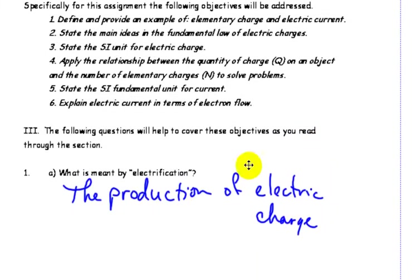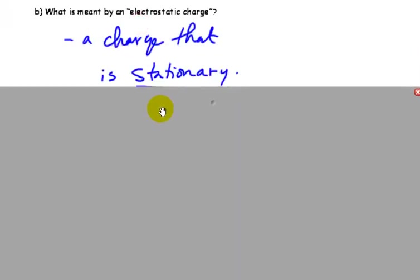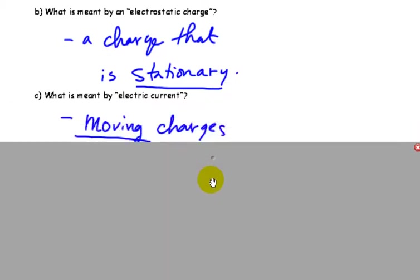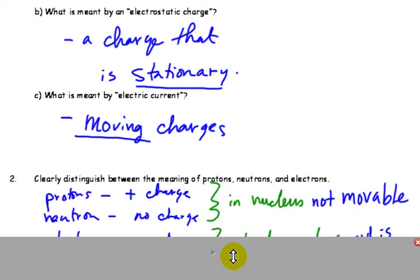So first of all, electrification is the production of an electric charge. And what you would have done back in grade 9 science is experiment a little bit with electrostatic charges. Meaning that those are charges that are stationary. They don't move continuously. They're simply transferred from one object to another. Whereas electric current deals with moving charges. Continuously moving.